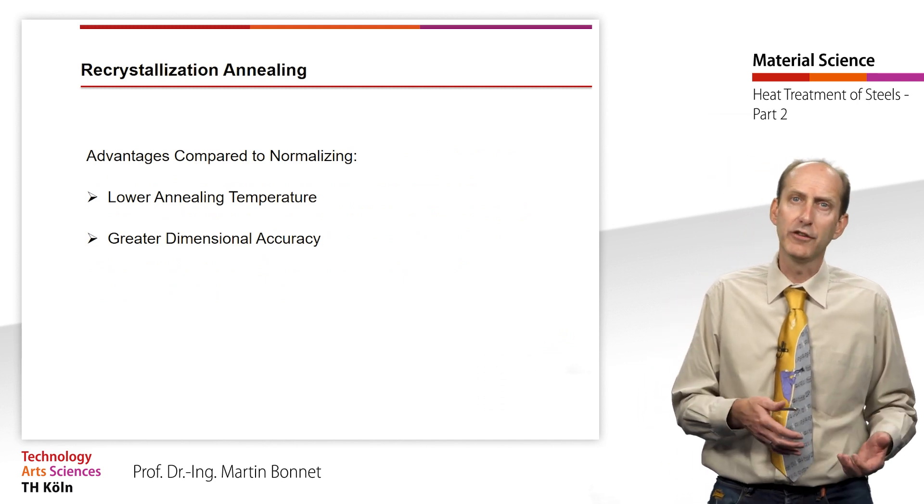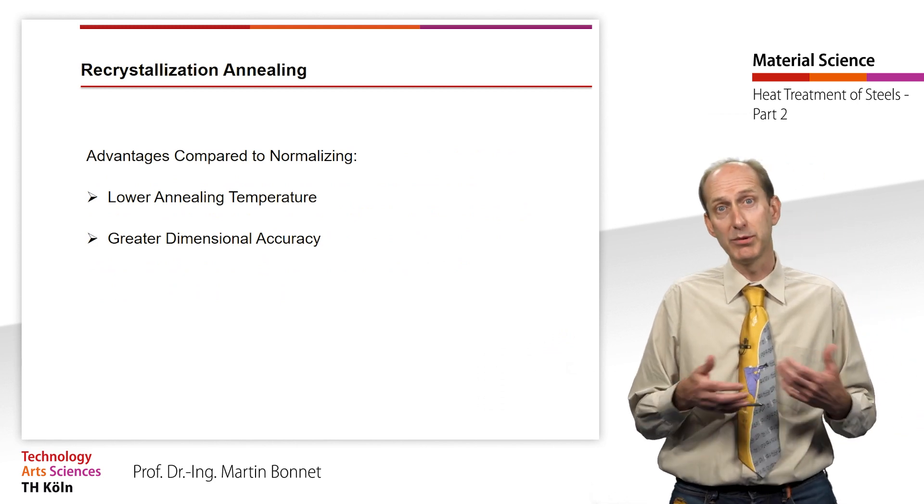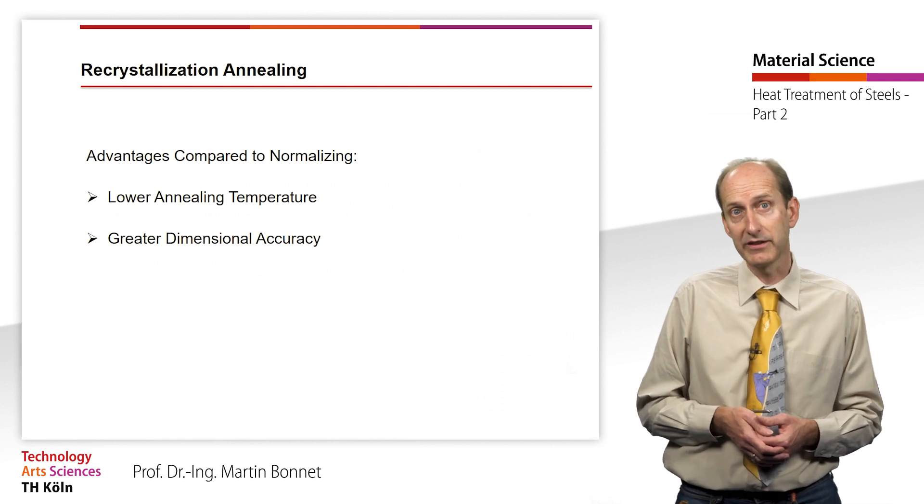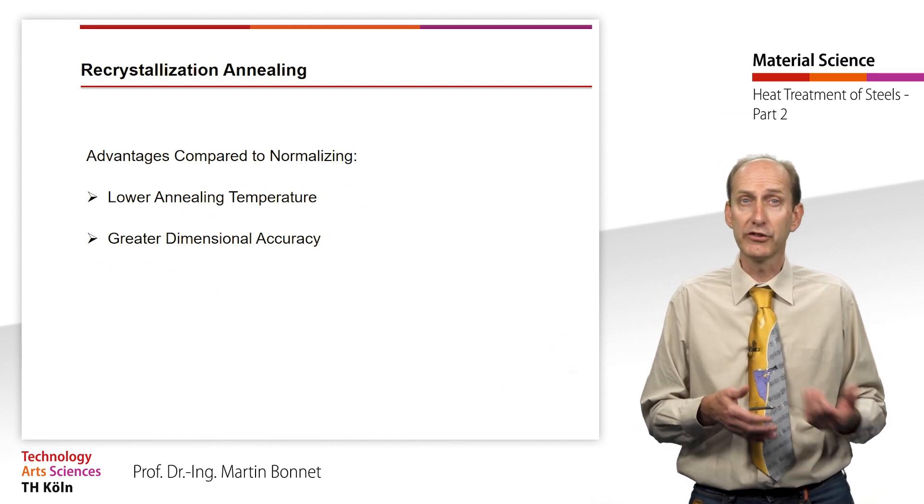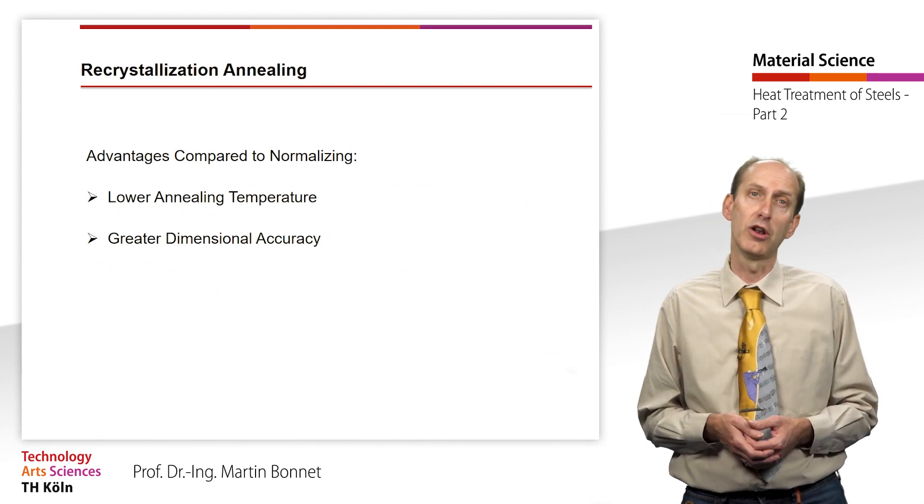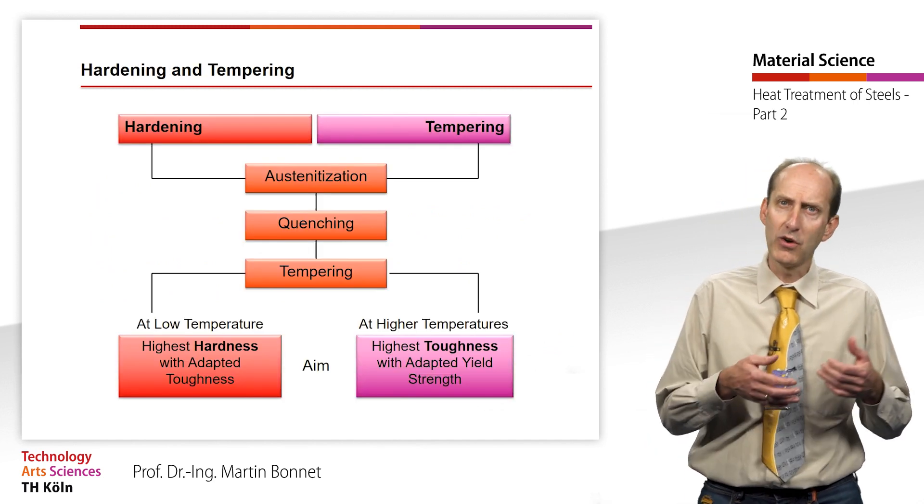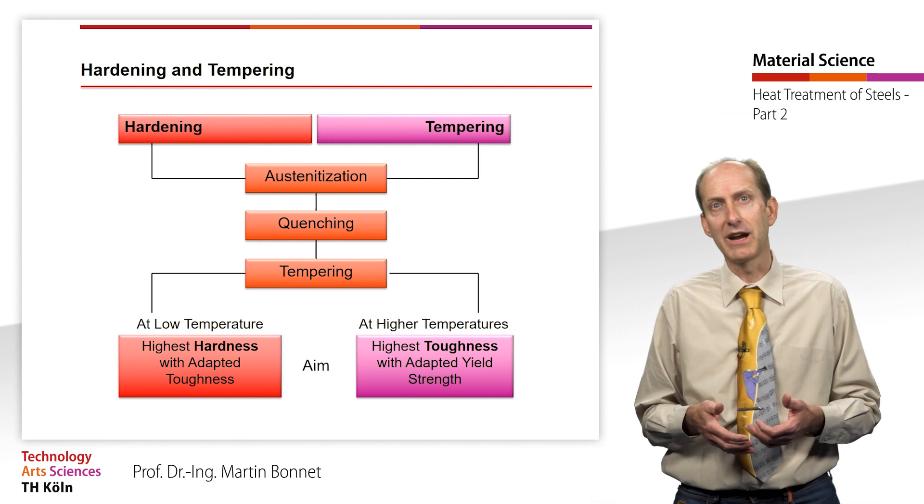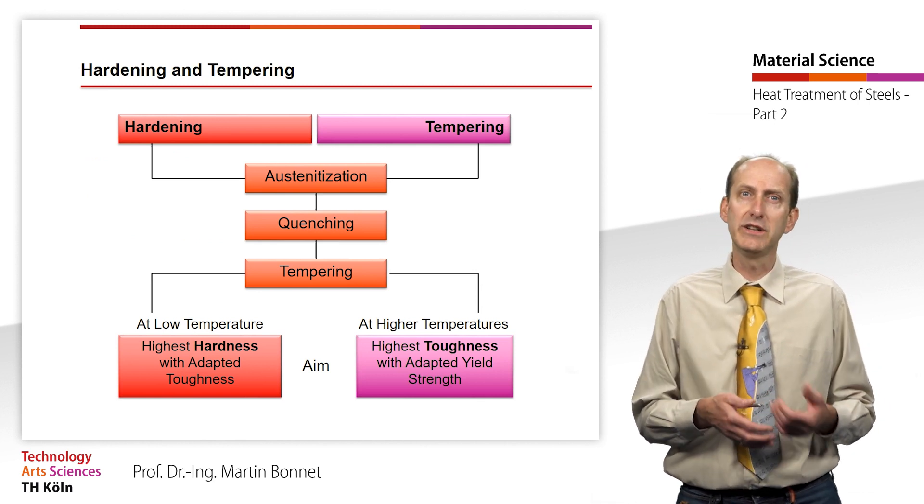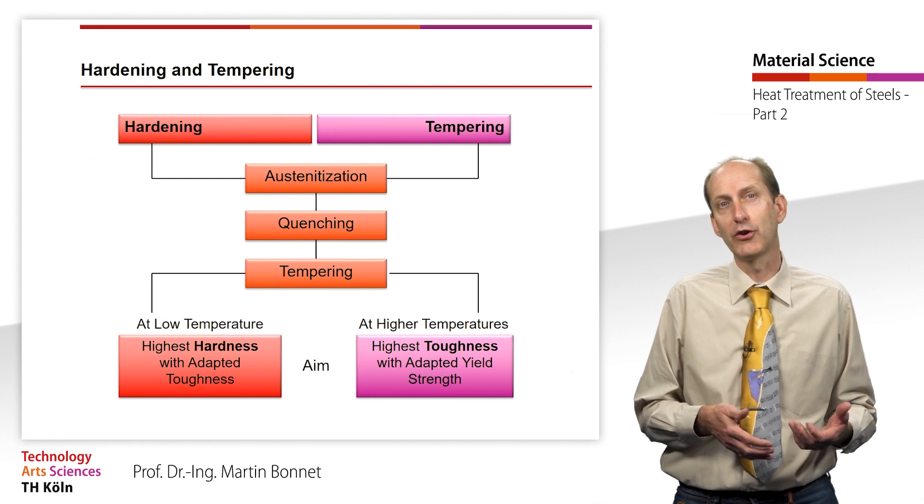In the case of materials that are not capable of transformation, such as high alloyed austenitic steel samples, recrystallization annealing is the only way to change the grain size at all.